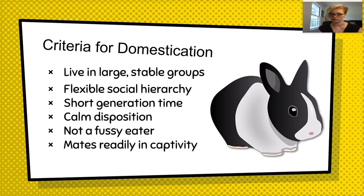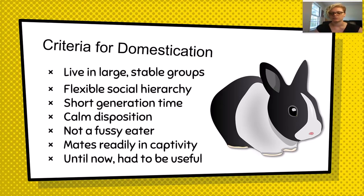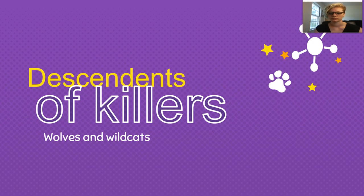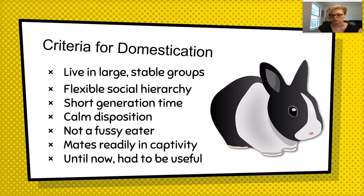Until recently, the animal also had to be useful. Leisure time and excess income is fairly new to humans, and until recently, only the richest people could afford pets purely for leisure. So if an animal could not provide food or labor, there was little point in people having them around. Most animals were domesticated as a source of food. Both dogs and cats are unique among our domesticated animals in that they are descended from predatory species.